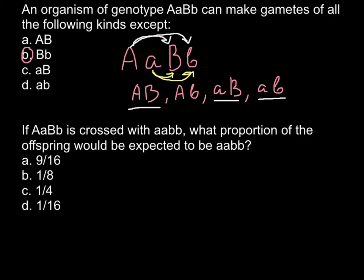Now let's move to the second question. If one genotype — capital A small a and capital B small b — is crossed with another genotype that is homozygous recessive for both genes, what proportion of the offspring would be expected to have the genotype small a small a and small b small b? We can solve this problem for each allelic pair separately.